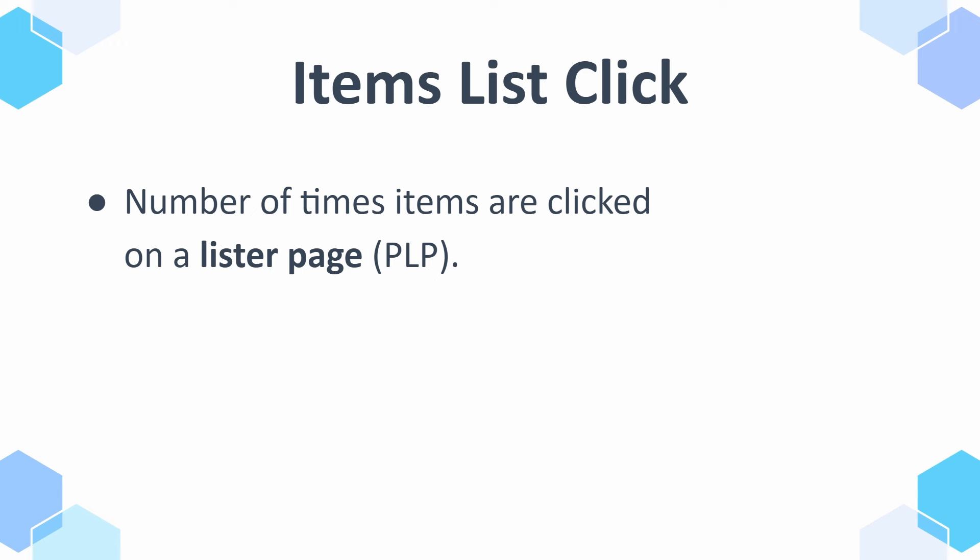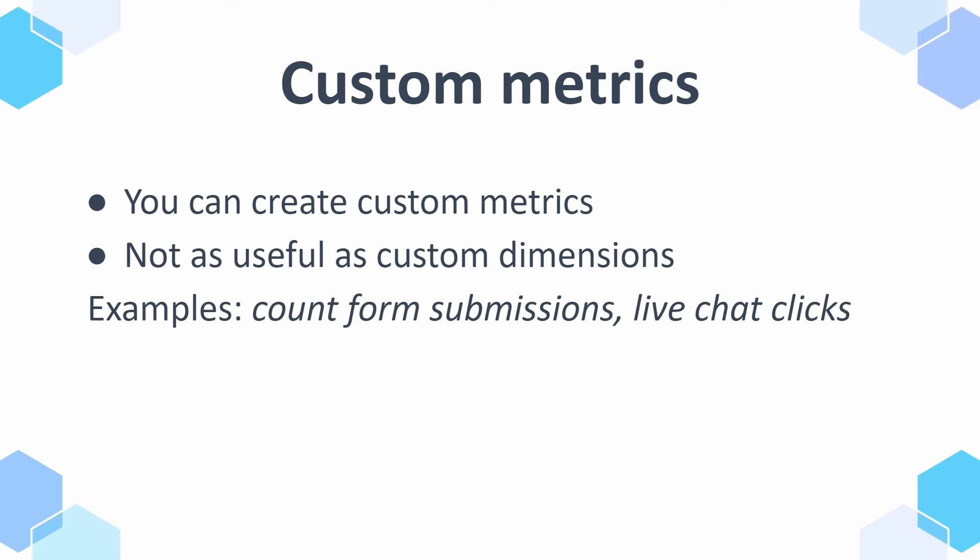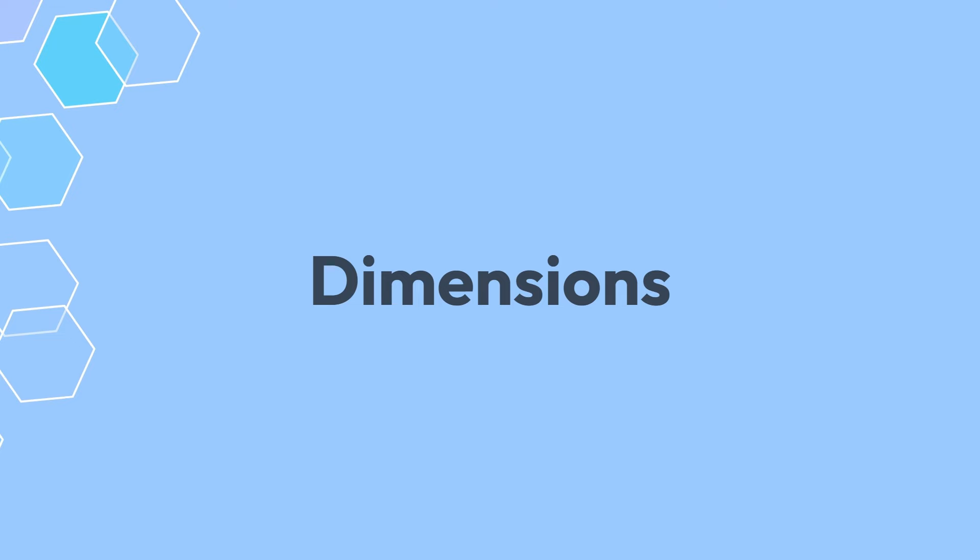Then we also have items list click, which is the number of times items are clicked on a lister page — pretty simple to track. Then we have custom metrics. I just want to mention that you can create these yourself; however, this is not the most used feature in GA4 and most people would use custom dimensions over custom metrics. As an example for a custom metric, you could use something like counting form submissions. But most of my clients use custom dimensions.